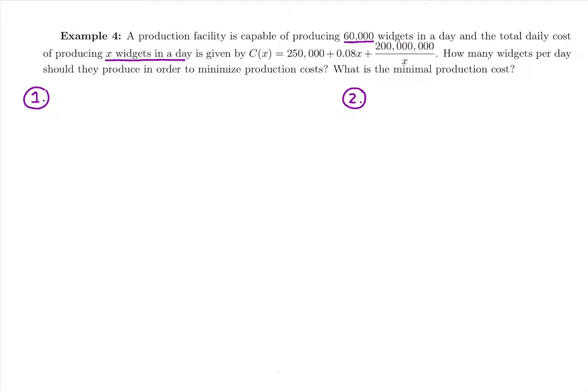The interval for this one - what's the least amount of something that they could make? It would be zero. And then what's the most amount that they could make? They say they can make up to 60,000.